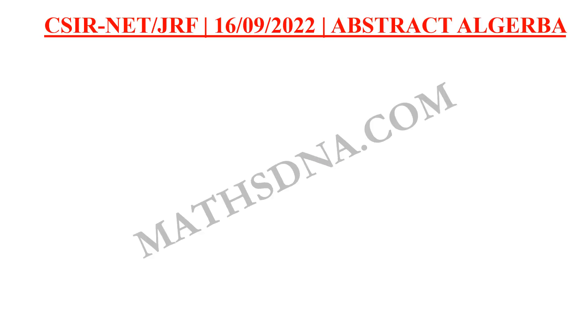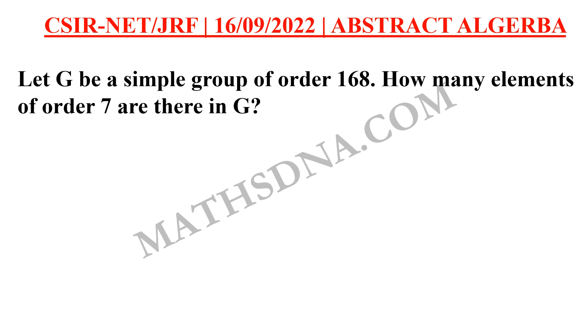Moving on to the question. The question is, let G be a simple group of order 168. Here the word simple is very important. And how many elements of order 7 are there in G? The options are A6, B7, C48 and D56.